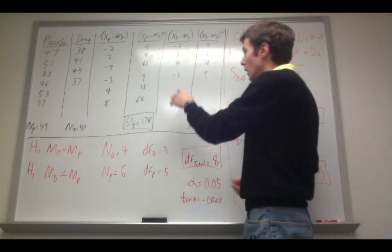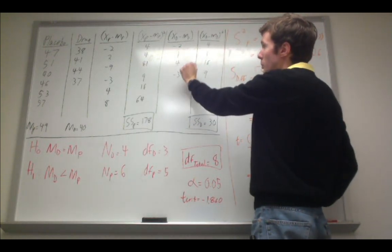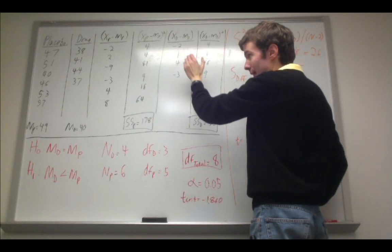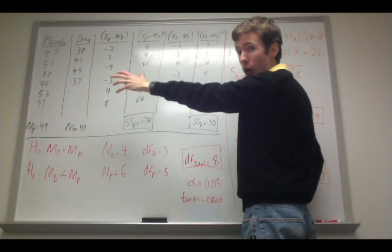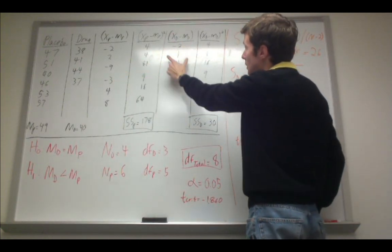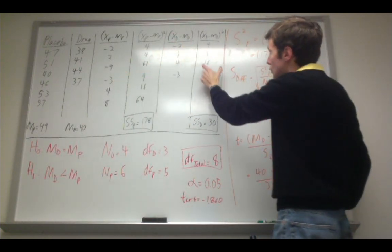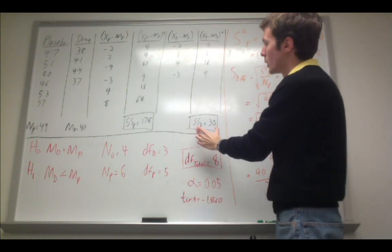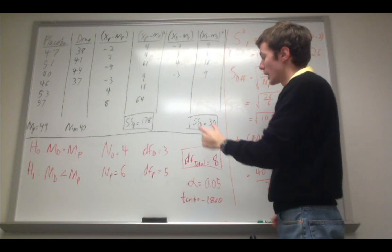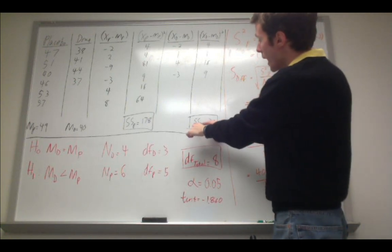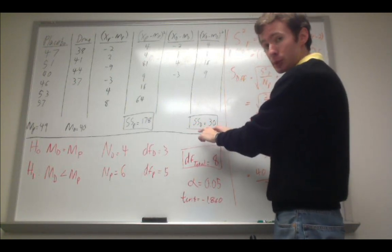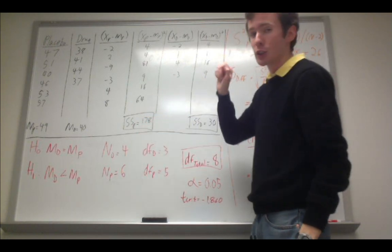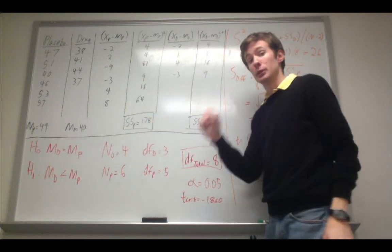We do the same thing for the people in the drug group. We take the mean, we subtract that from each score in the drug group. Then we take each of these differences, square them, sum them up, and we get the sum of squares for the drug group. I have them labeled here as SS subscript d — sum of squares for the drug group — and SS subscript p for sum of squares for the placebo group.